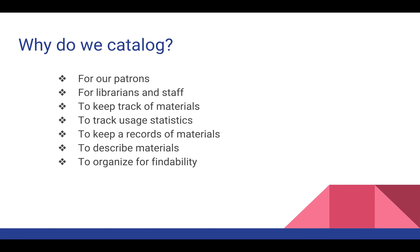So why do we catalog? We catalog for a number of reasons. We do that for the benefit of our patrons first of all, so they can locate things not only in the library, but also in the OPAC — the Online Public Access Catalog. We catalog for you librarians and your staff, so during a reference interview you know exactly where to go to find something for a patron, or when shelving you know exactly where to put things. We also catalog to keep track of the many things you've purchased for your library.